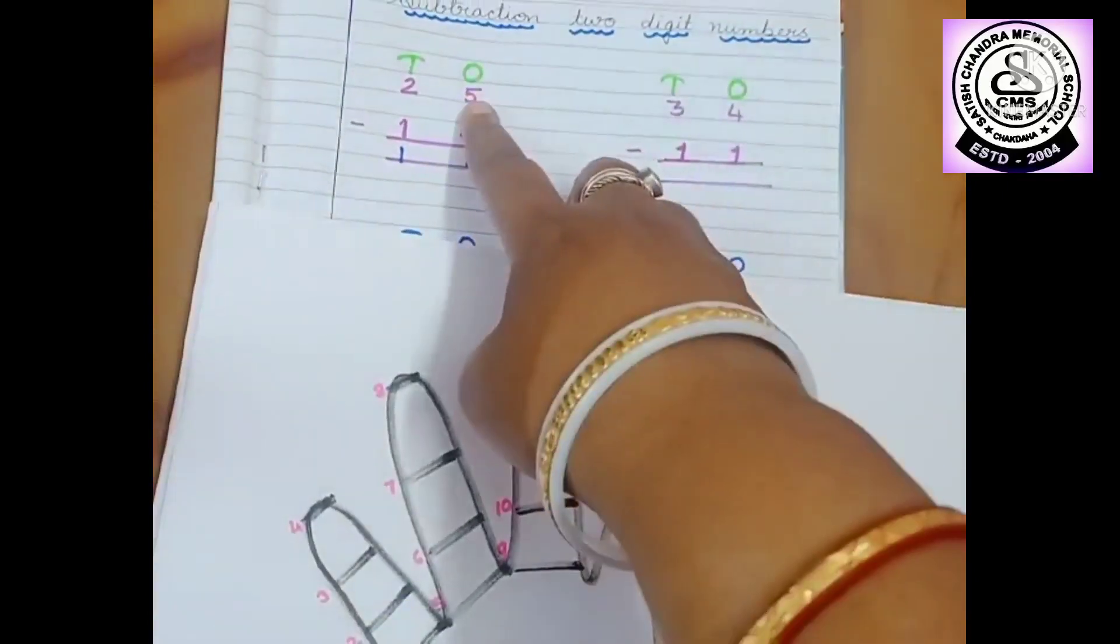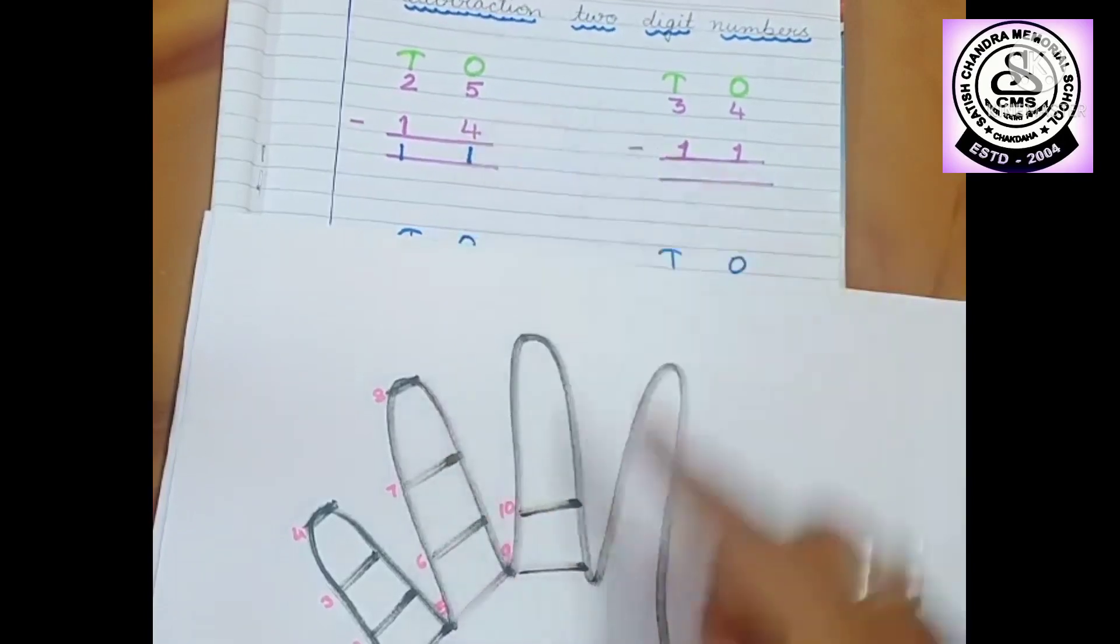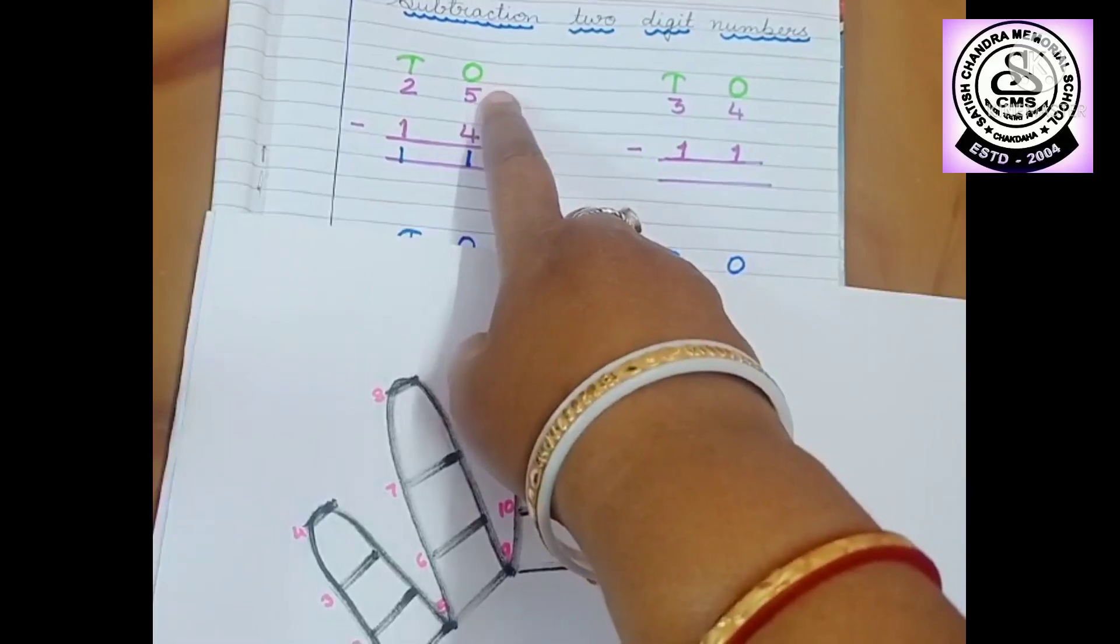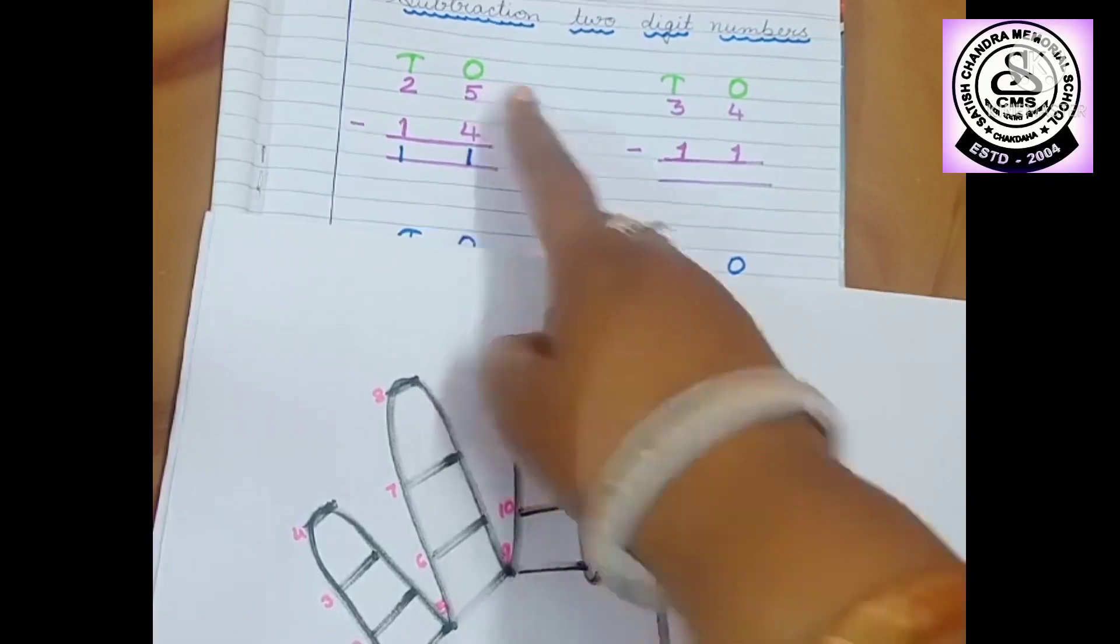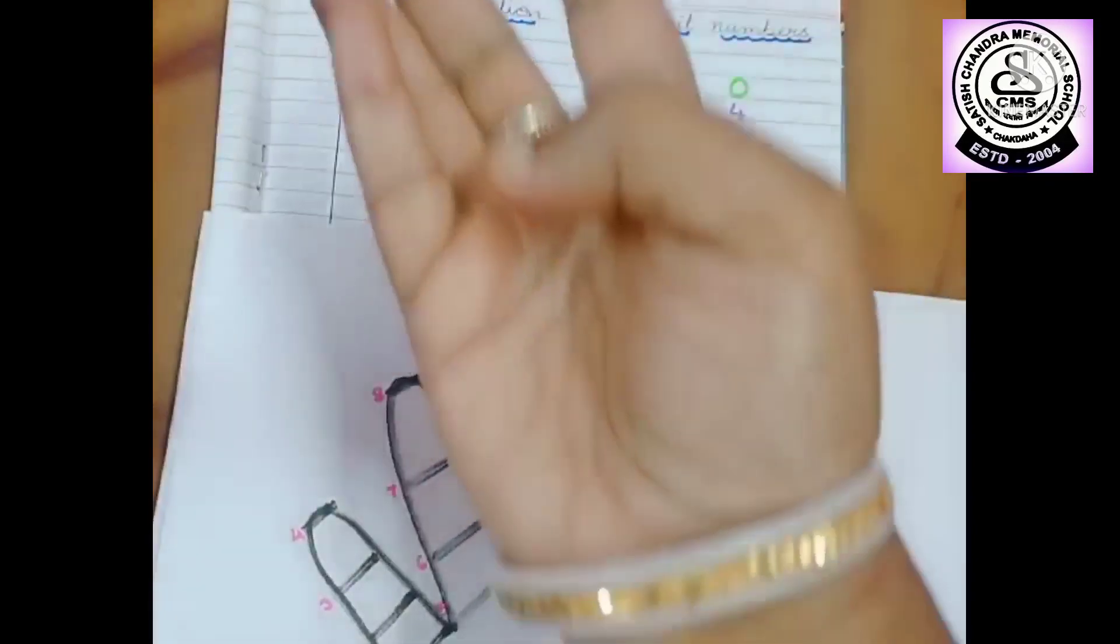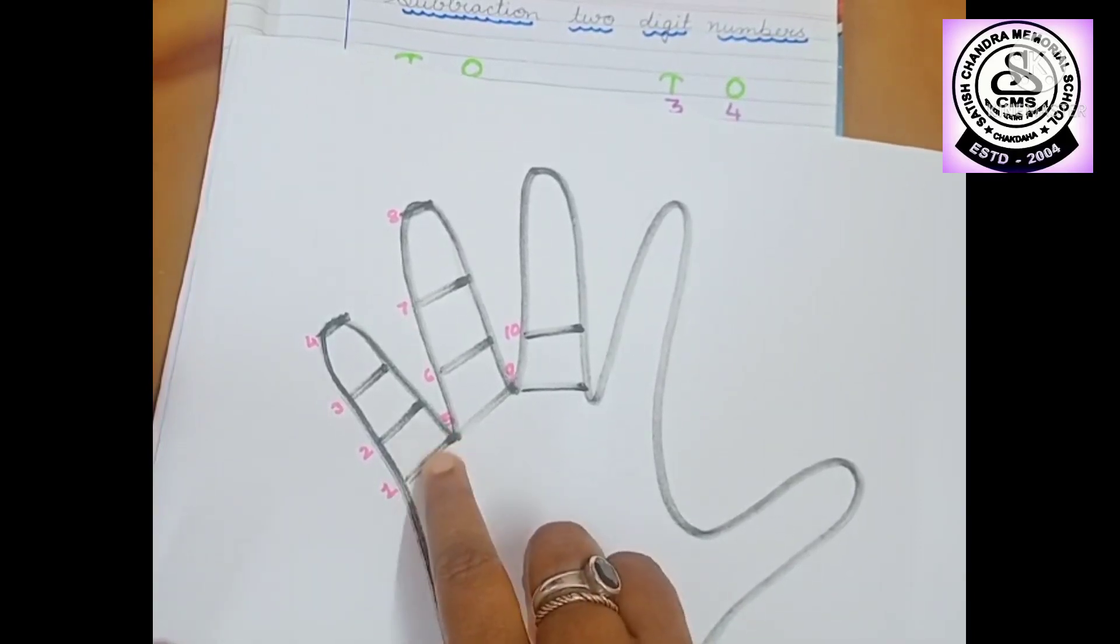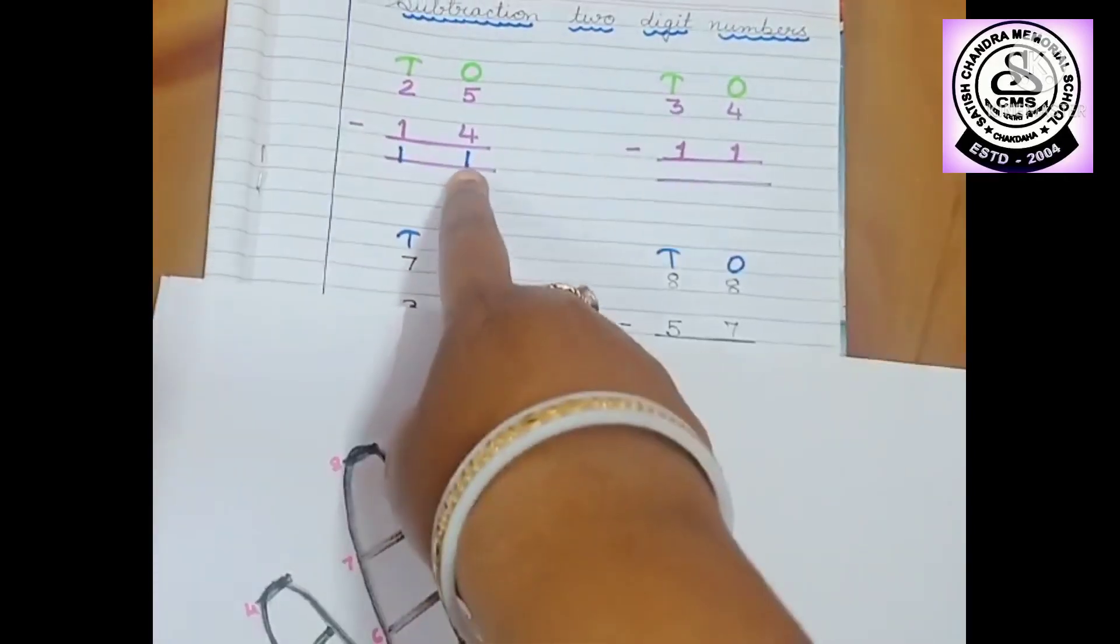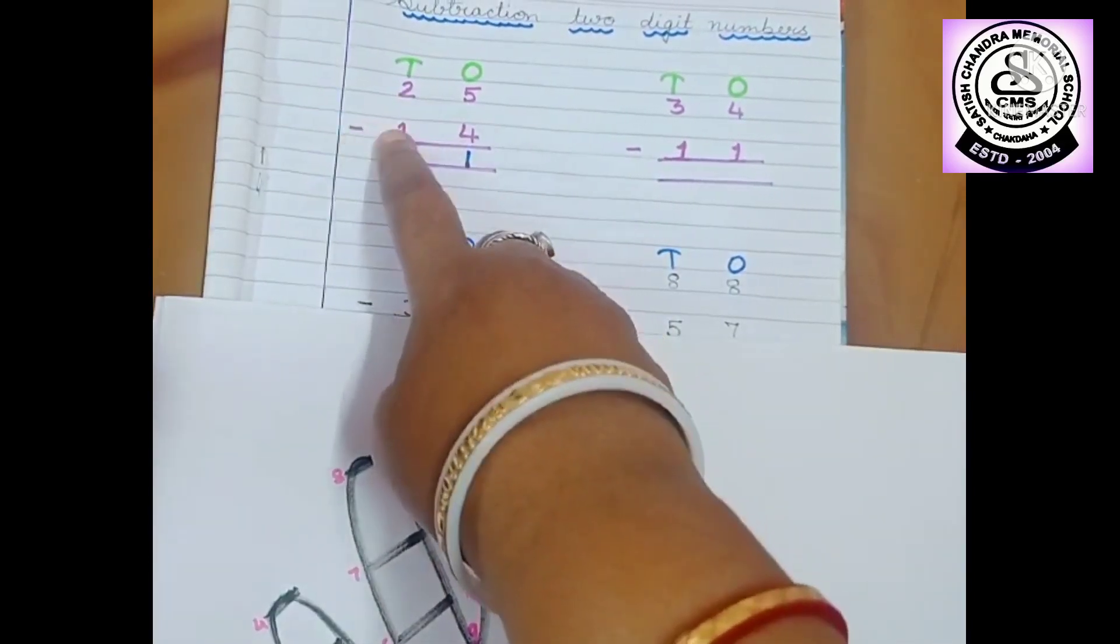First sum is 5 minus 4. So after 4, after 4, what is the number? How many numbers we have to count up to? Which number? Up to 5. So after 4 is 5. That means after 4, here we will count. After 4 is 5. So what is the house number here? 1. So this is the answer, 1. I have written here. Here 2 minus 1.